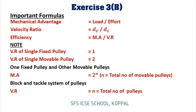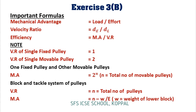There is one more formula: Mechanical advantage equals N minus W divided by E, where N is the number of pulleys, W is the weight of the lower block, and E is the effort.